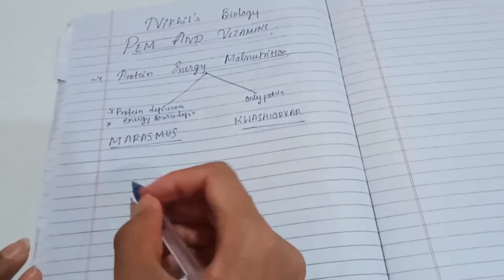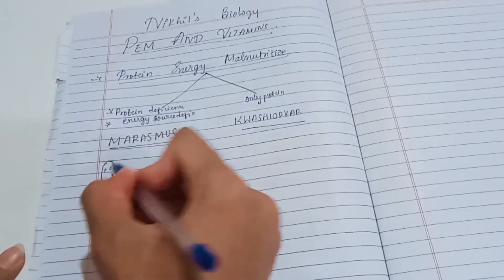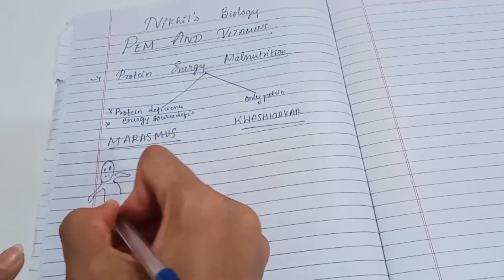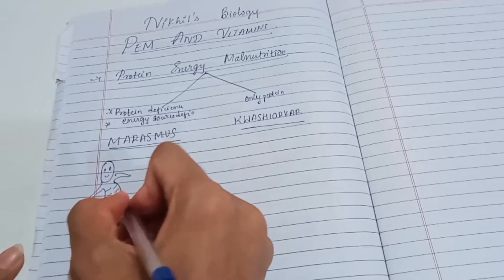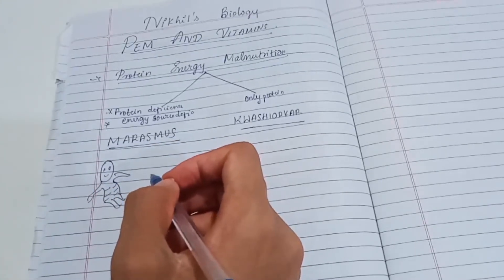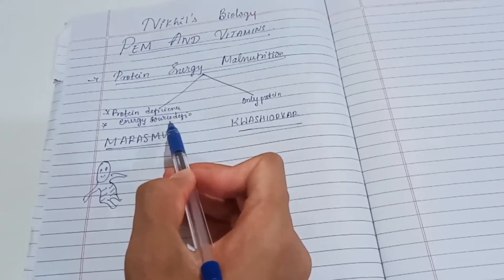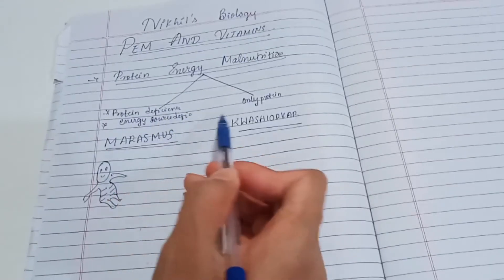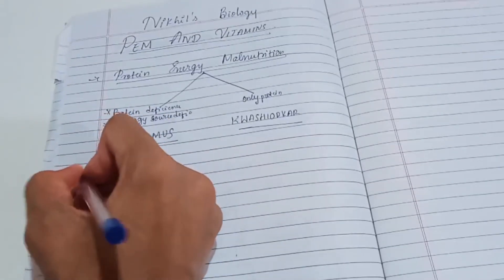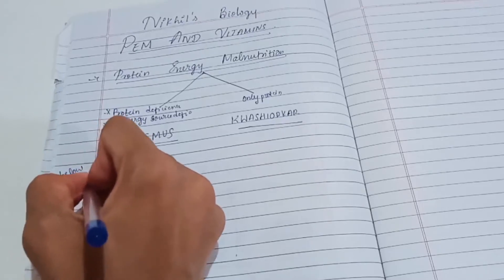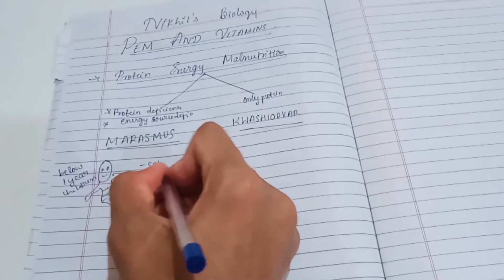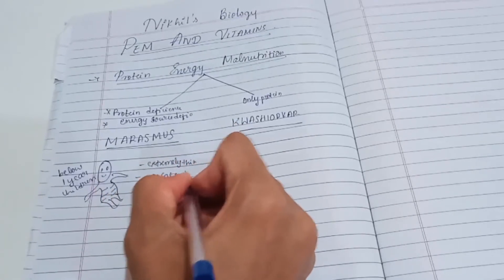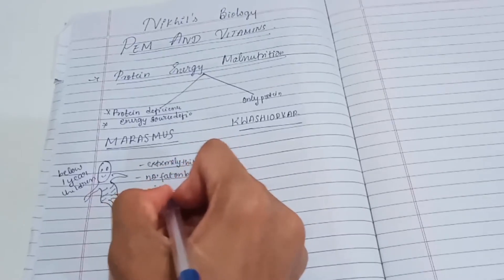Let's look at Marasmus. The baby is very lean and thin. You will see the baby's ribs clearly. The energy sources — carbohydrates and lipids — are deficient, and protein is also deficient. This is seen in below one-year-old children. The body is extremely thin, with no fat. Fat is completely utilized, and the ribs are visible.